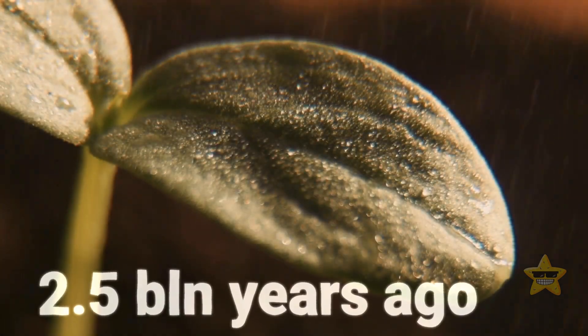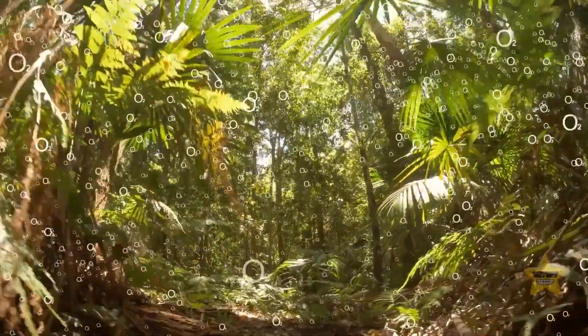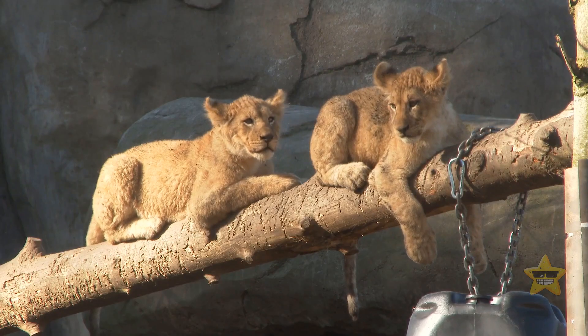2.5 billion years ago, Earth got photosynthetic organisms that started pumping oxygen into the atmosphere and helped create the entire animal and plant kingdom across the planet.